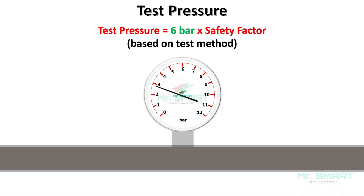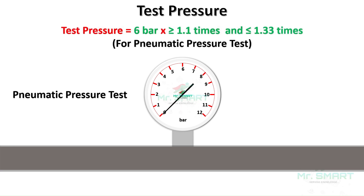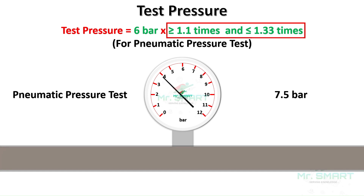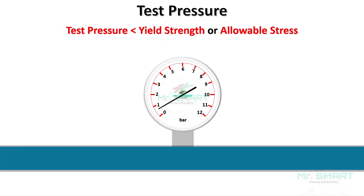For the same working pressure of 6 bar, the safety factor for pneumatic pressure testing can be chosen between 1.1 and 1.33. So during a pneumatic pressure test of the same pipeline system, it's better to test at 7.5 bar. One important point: the calculated test pressure should always be less than the yield strength or maximum allowable stress of the pipeline and other fittings material.